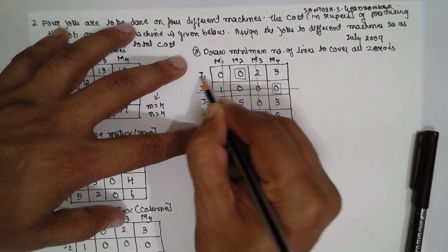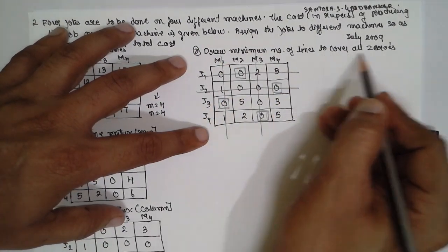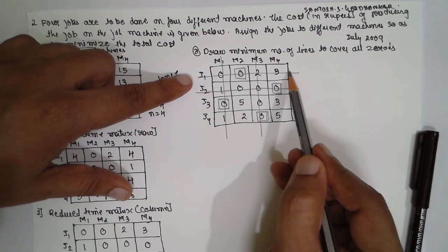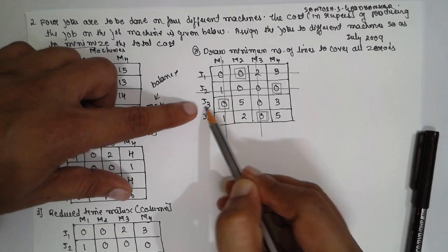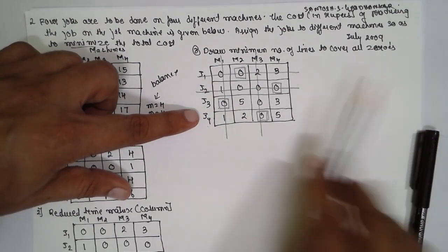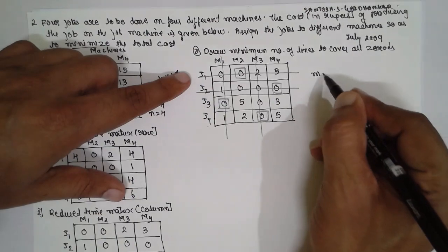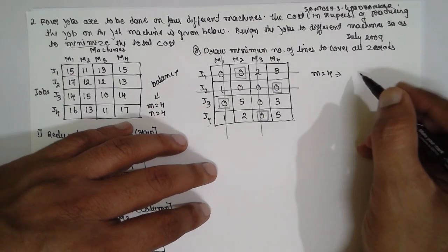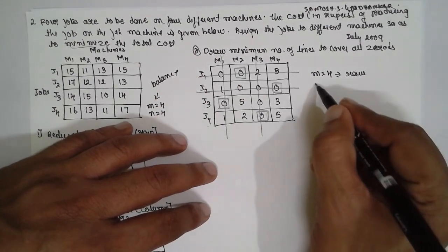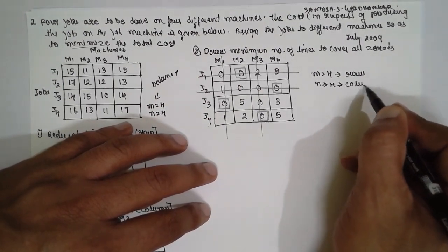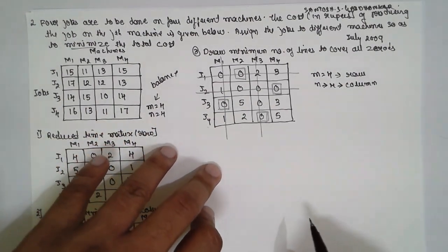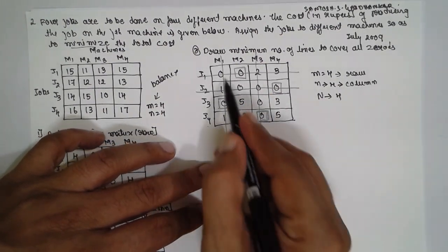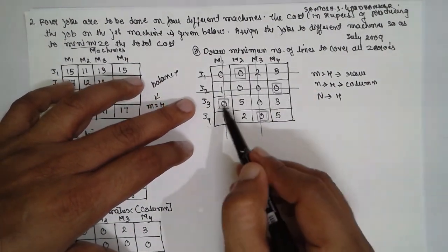Draw the minimum number of lines to cover all zeros. Check that each row and column contains an assignment: Row 1 — yes, Row 2 — yes, Row 3 — yes, Row 4 — yes. The number of assignments equals 4, which equals m=4. The assigned value (capital N) equals 4, satisfying the optimality condition. Each row contains an assigned value, so the solution is complete.